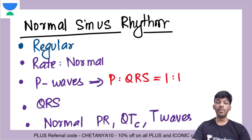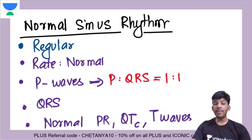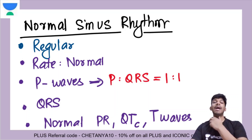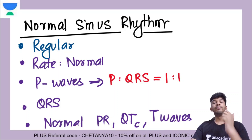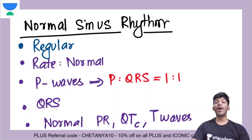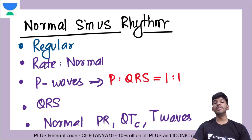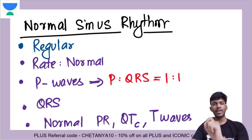The atrial and ventricular rhythms should be normal. The heart rate should lie between 60 to 100. P waves should have a normal shape and be upright, indicating a sinus impulse. The PR interval should be between 0.12 to 0.20 seconds, QRS complex should be less than 0.12 seconds, T waves should have a normal shape, the corrected QT interval should be less than 0.45 seconds, and there should not be any irregular heartbeats. That was interpretation of clinical ECG in eight simple steps.